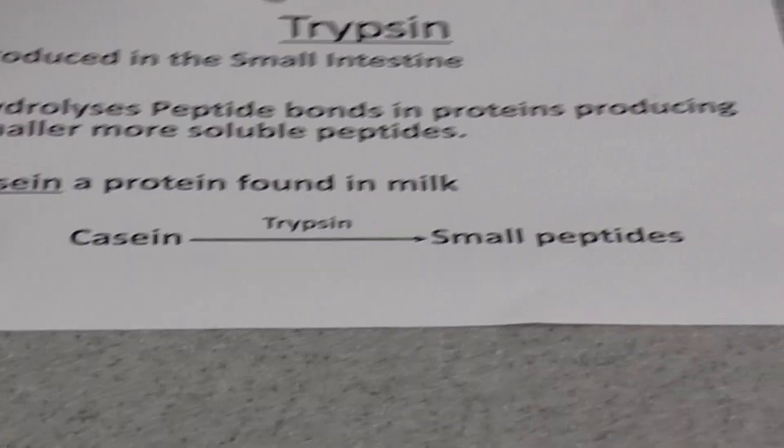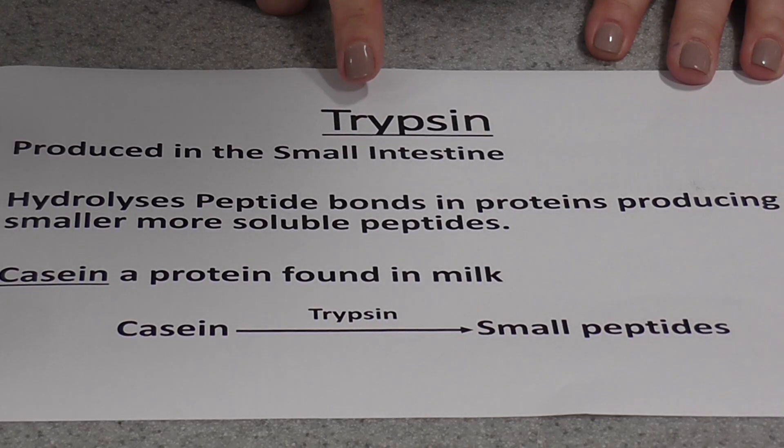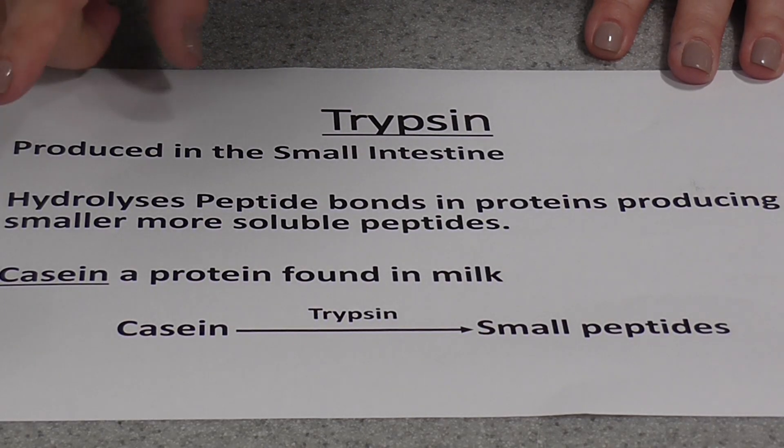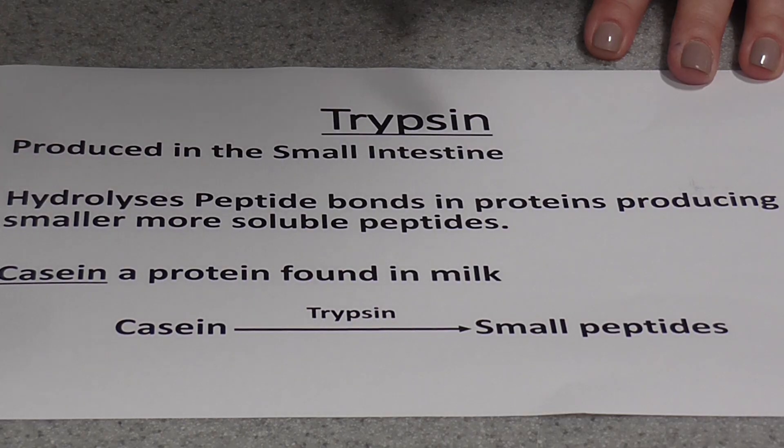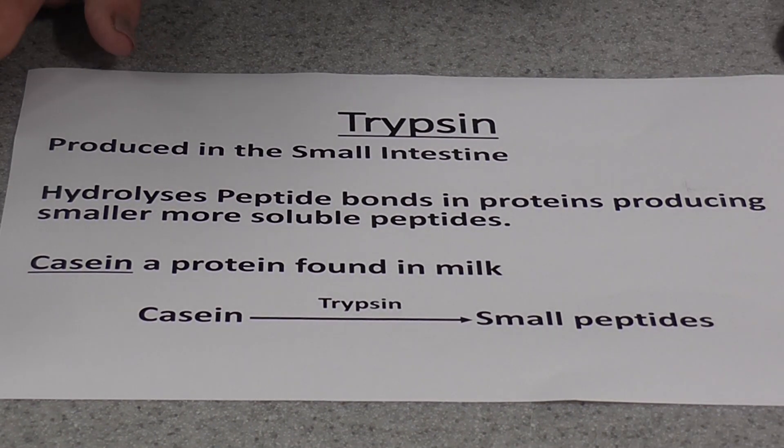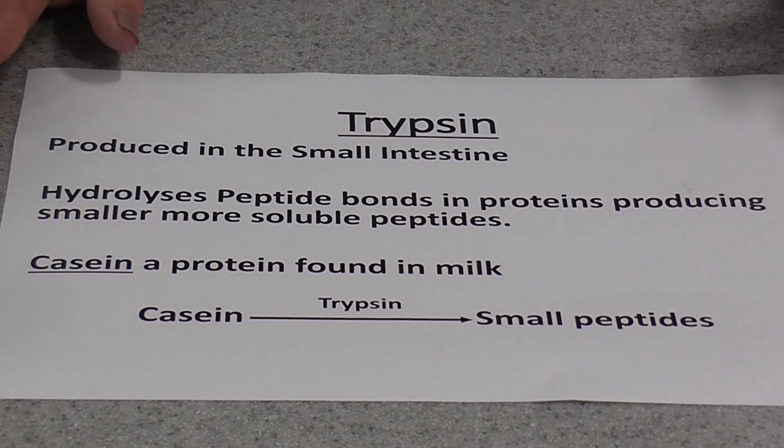The enzyme that we're going to use today is a protease enzyme known as trypsin. It's produced by the small intestine of most mammals, and it's involved in the hydrolysis of peptide bonds in proteins to produce smaller, slightly more soluble peptides, but also it does make the protein in milk coagulate.